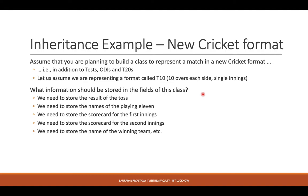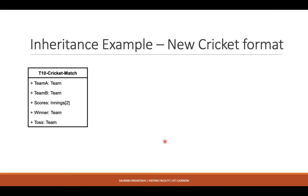What are some of the things I would need to store in a T10 cricket match class? I need the names and details of the two teams, the playing 11, the result of the toss at the start of the match — whichever team wins the toss decides who bats first. Then I need to store the scorecard for the first innings and the scorecard for the second innings, and based on that, the name of the winning team. I'm actually using two classes here and there is a case of nesting — using a structure inside another structure as a member variable.